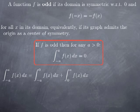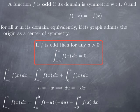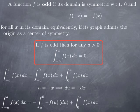In the first integral, we make the substitution u equals negative x. Then du is negative dx, so we replace dx by negative du and f of x by f of negative u. Because we're substituting in a definite integral, we also change the bounds: when x is negative a, u is a; and when x is zero, u is also zero. So we get the integral from a to zero of f of negative u times negative du. We pull out the negative in front of du, and since the function is odd, f of negative u equals negative f of u.